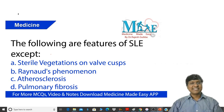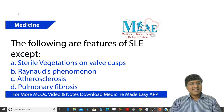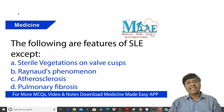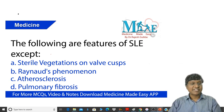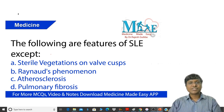As part of today's Daily Dose, the question is: the following are the features of SLE except — the options are sterile vegetations on valve cusps, Raynaud's phenomenon, atherosclerosis, and pulmonary fibrosis.